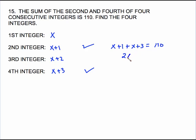So combine your like terms here, it's 2x plus 4 equals 110. Simple two-step equation, subtract 4 from both sides. And we have 2x equals 106, divide by 2, and x equals 53.